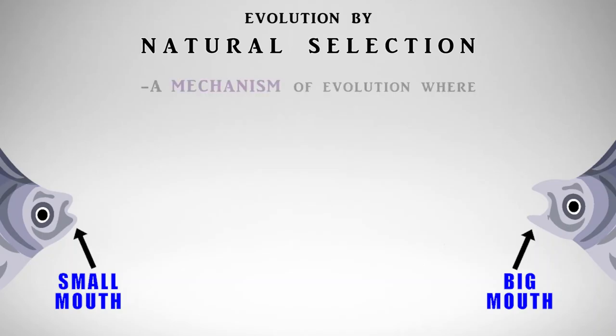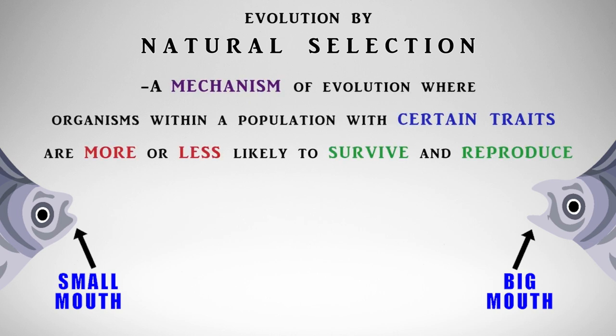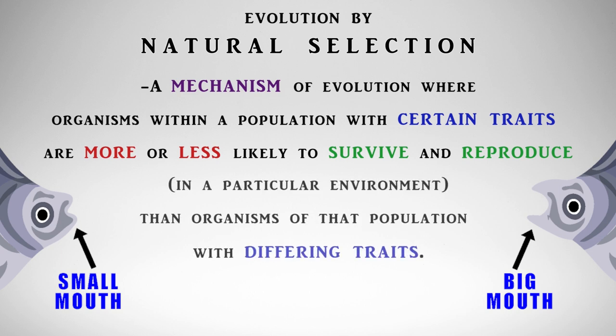Natural selection is the mechanism of evolution where organisms within a population with certain traits are more or less likely to survive and reproduce in a particular environment than organisms of that population with differing traits.